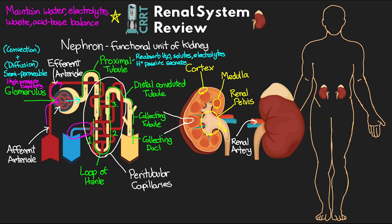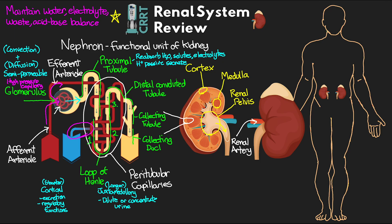Different nephrons have different responsibilities in the loop of Henle. Shorter cortical nephrons focus on excretion and regulatory functions, while longer juxtamedullary nephrons either dilute or concentrate the urine depending on what's needed. The distinction in thickness between parts of the loop of Henle impacts the permeability of the membrane, allowing it to perform different functions.